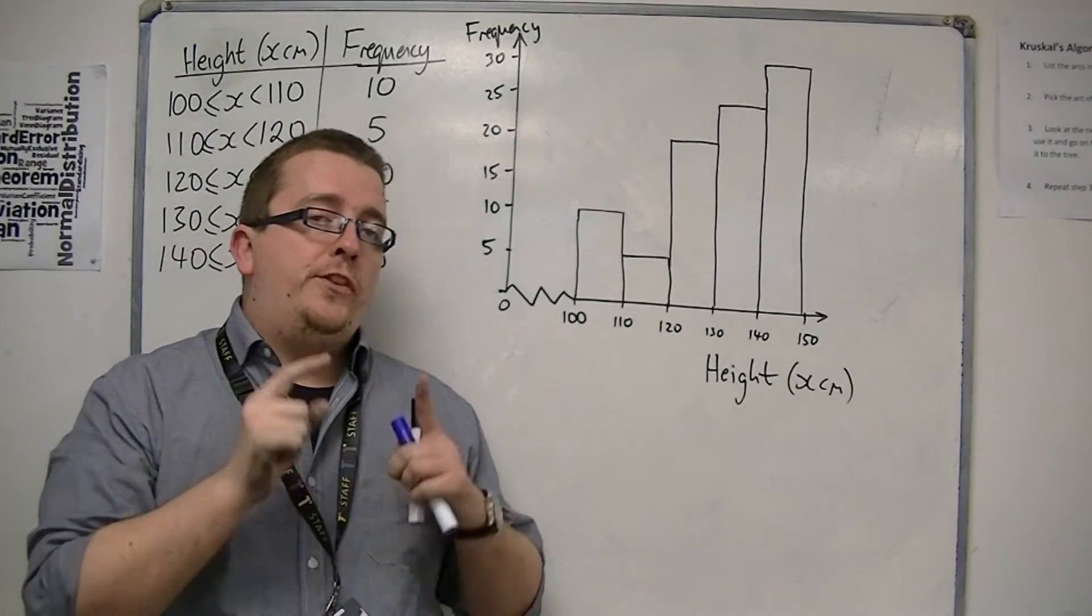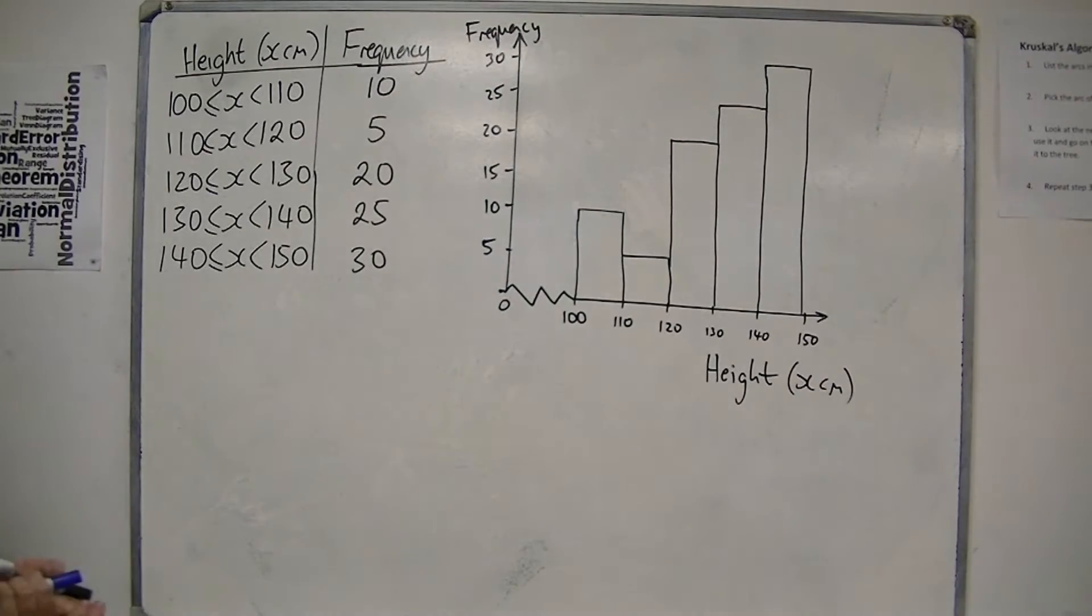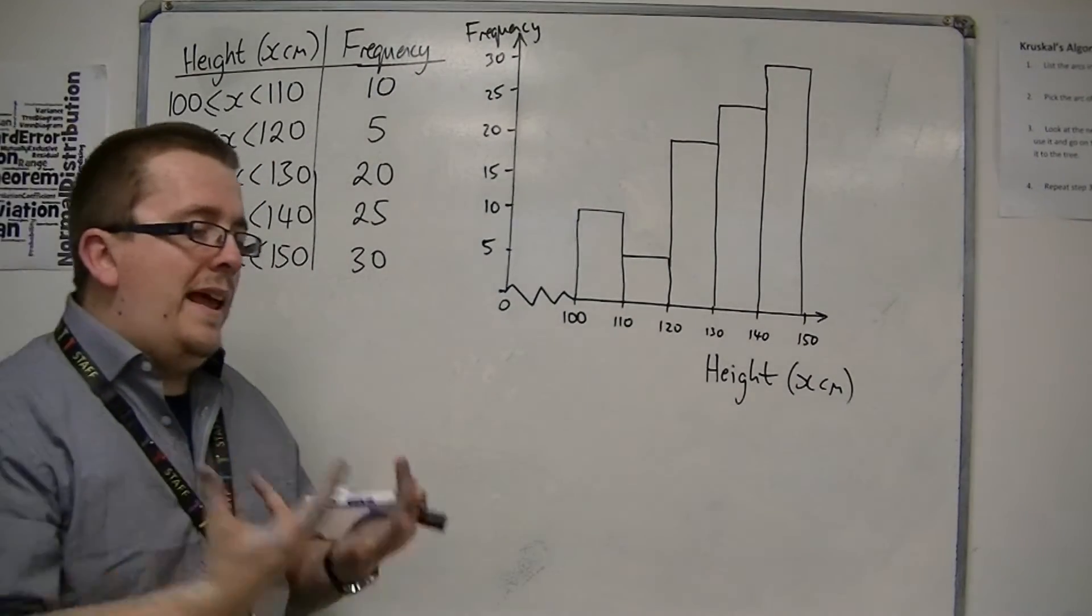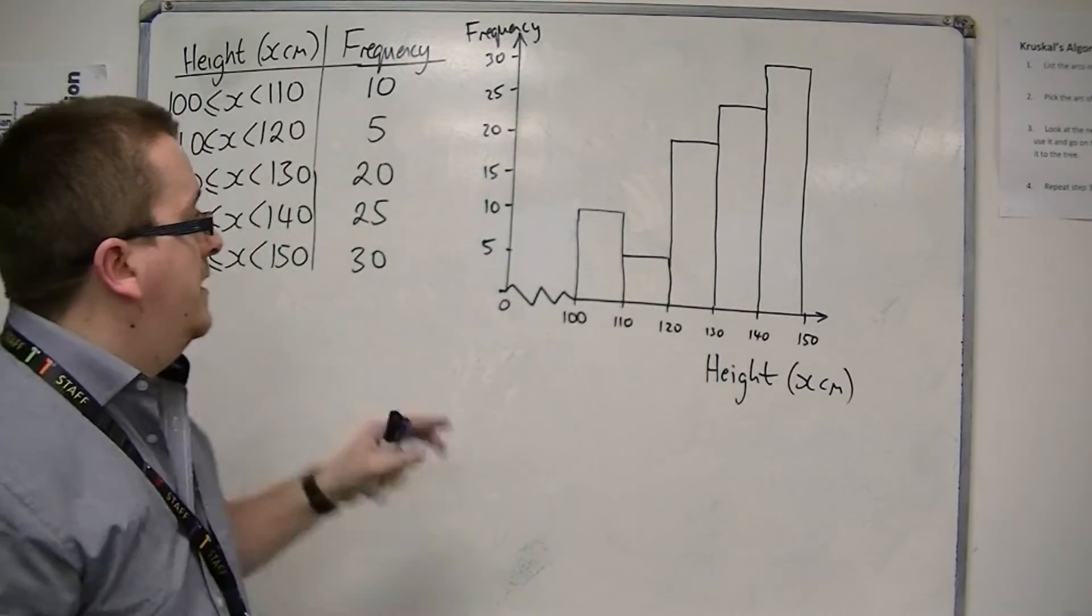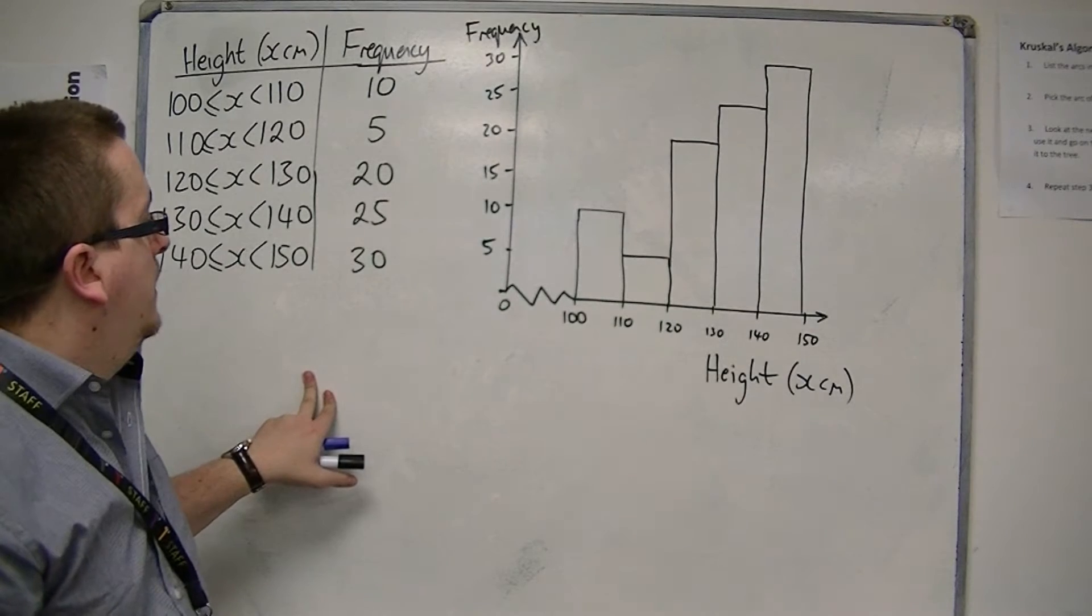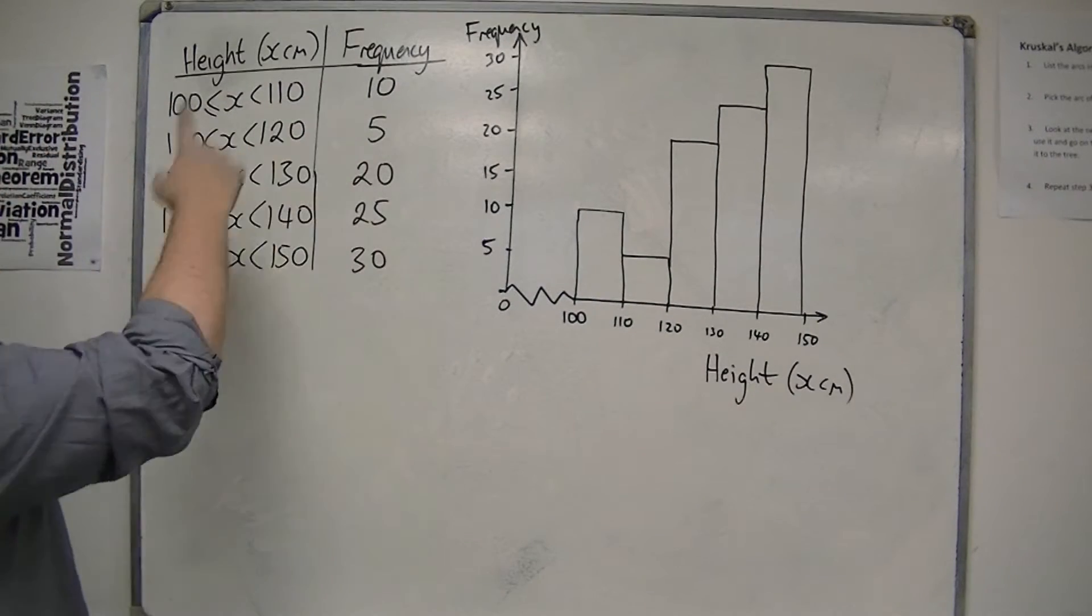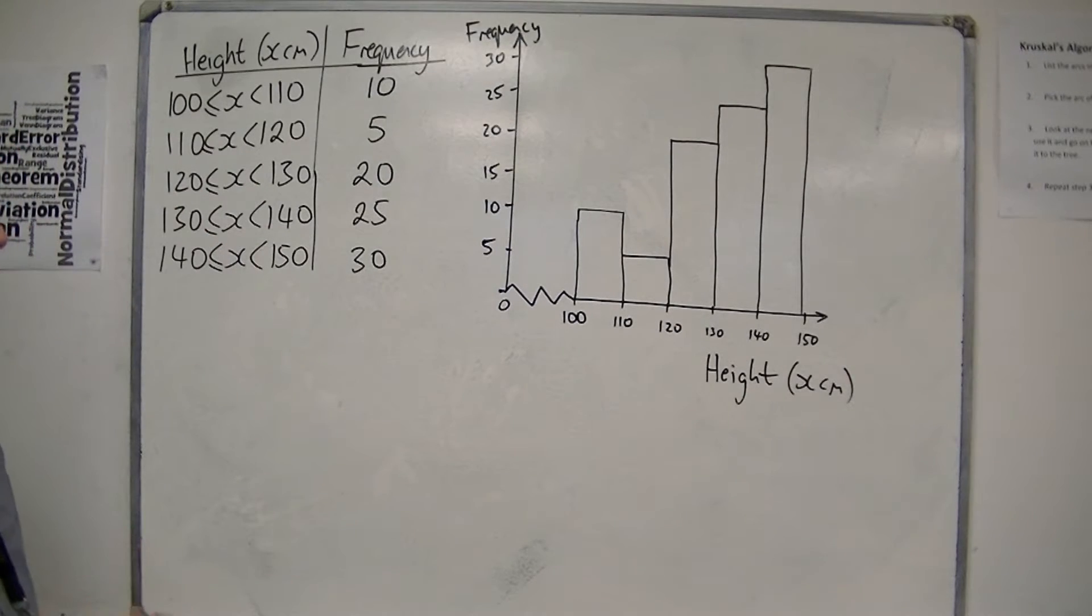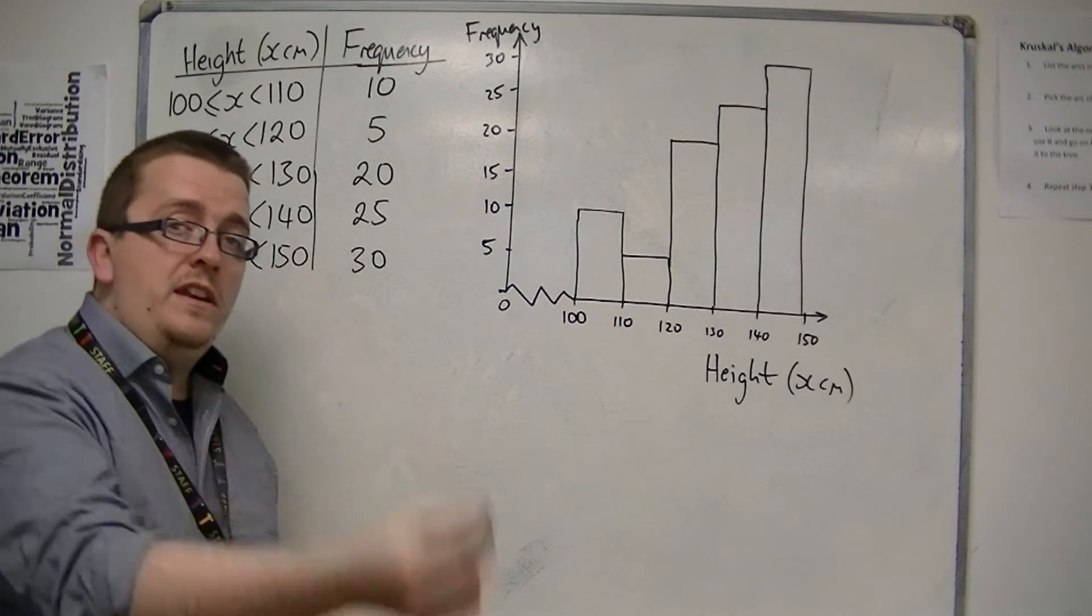Now I'm going to introduce the frequency polygon. The frequency polygon is a way that allows us to compare two sets of continuous data like this. For example, I might be looking at the heights of students in one class or one year group, and then I might want to compare that with the heights of students in another year group.